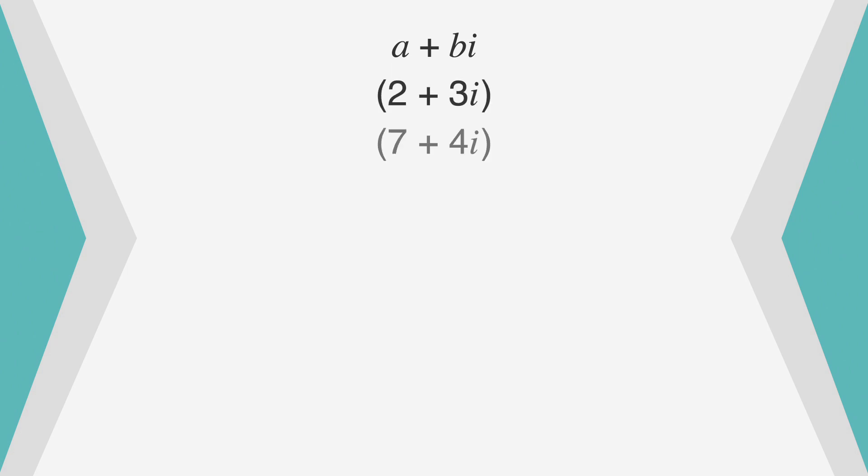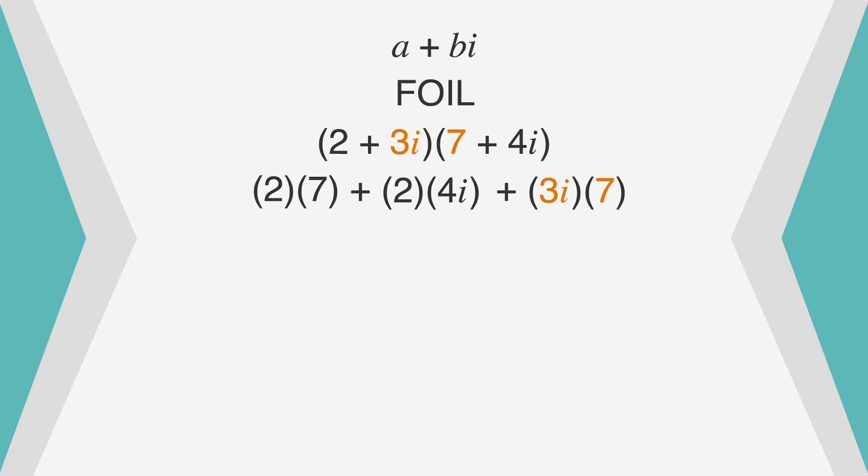Another complex number is 7 plus 4i. If we want to multiply the two complex numbers, we can use the FOIL method. We'll multiply the first part of each of the complex numbers, 2 times 7, and then the outside parts of each of the complex numbers, 2 times 4i, and then the inside parts of each of the complex numbers, 3i times 7, and finally the last parts of each of the complex numbers 3i times 4i.